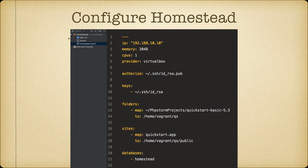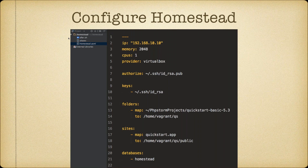Once the Homestead environment is initialized, you'll have a .homestead folder containing an after.sh file, aliases, and Homestead.yaml. Homestead.yaml is the core configuration file. Opening it, you'll see options for setting the VM's IP, memory, CPU count, and provider. There's also SSH key configuration. On Mac or Linux, the defaults are mostly fine; on Windows you'll need to change some paths. You also map folders from your host operating system to the Vagrant machine, allowing you to edit code on your host without transferring files to the VM.